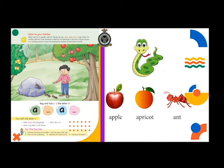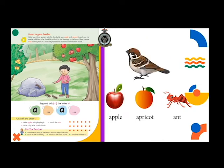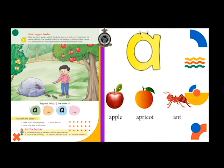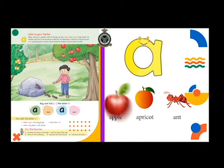This is the sound of a snake. This is the sound of a sparrow. Similarly, 'a' is the sound of the letter A. Letter A says 'a' — apple, a — apricot, a — ant. Look around yourself and try to name the objects that have the 'a' sound.